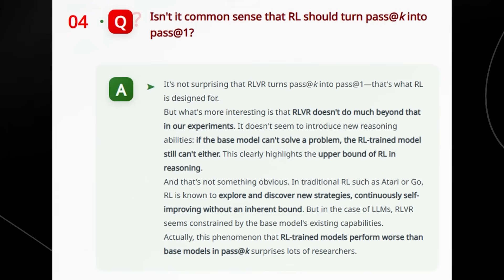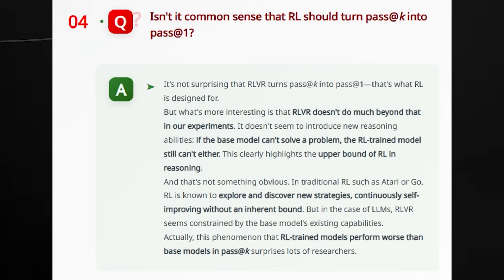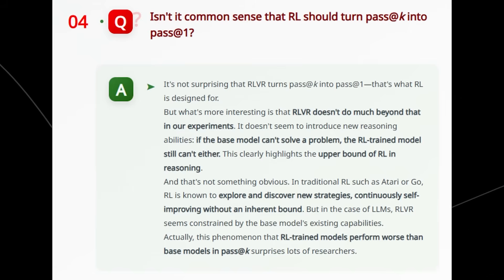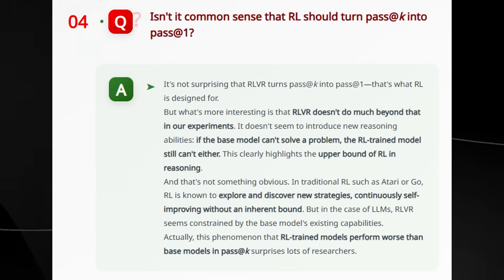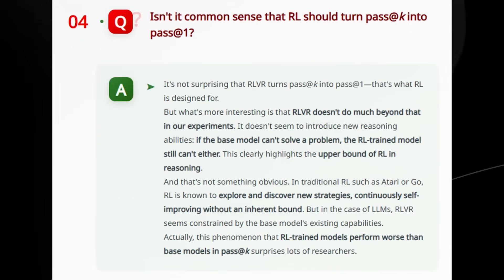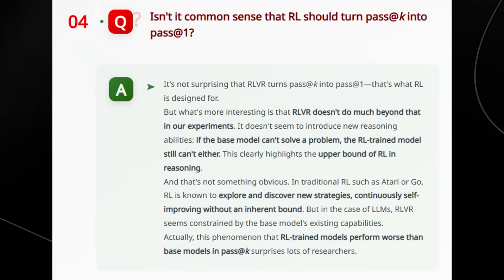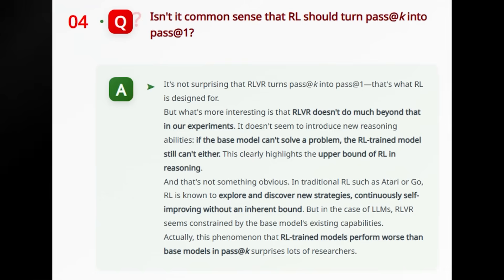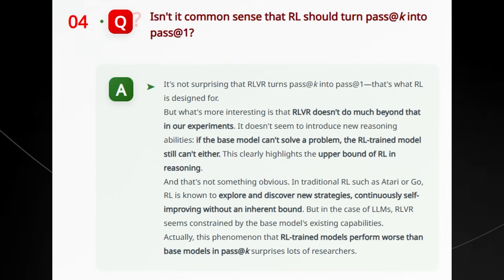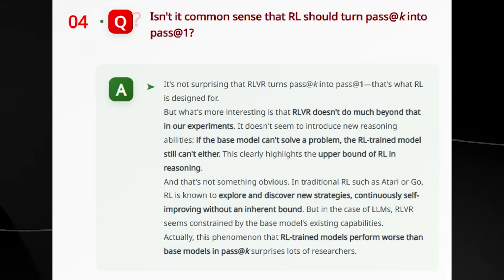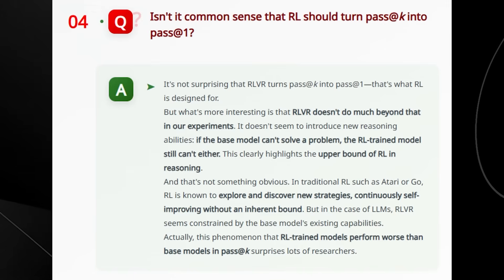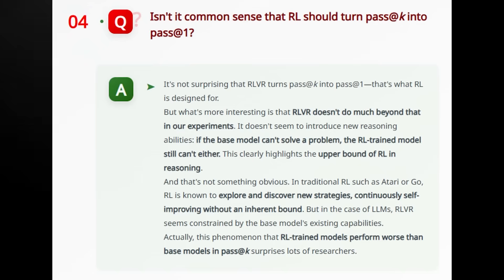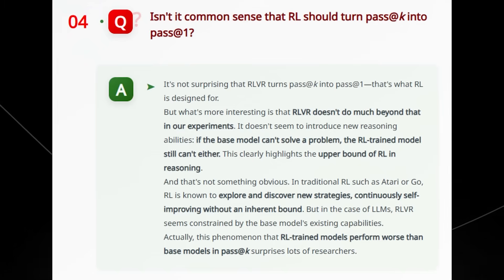But what is surprising is that reinforcement learning doesn't expand what the model can do, it just makes it more efficient. They're basically saying that look, if the base model can't solve a problem even after 1,000 tries, the reinforcement learning model won't be able to solve it either. That means reinforcement learning isn't helping the base model learn new reasoning strategies, it's just tuning it to focus on what it already knew. And this matters because in classic reinforcement learning, the whole point is to discover better strategies over time. But here with reinforcement learning and LLMs, it doesn't explore new thinking, it doesn't break out of the box, it doesn't break out of the base model's limits—it just tightens what the model already does. And the reason they were surprised about this is because in the pass at k experiments, where the model gets lots of tries to answer, the base model actually performs better than the reinforcement learning trained model.